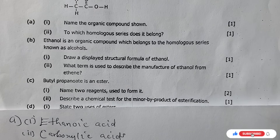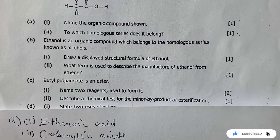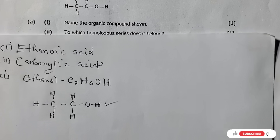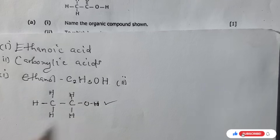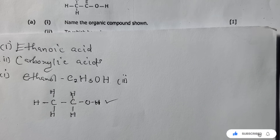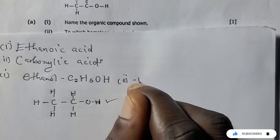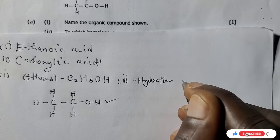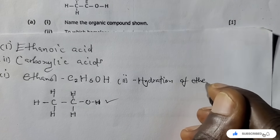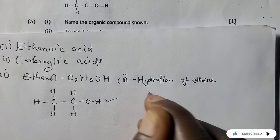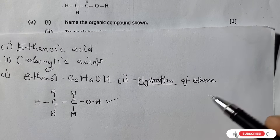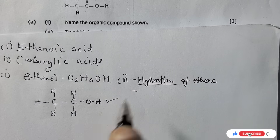The next question asks: what term is used to describe the manufacture of ethanol from ethene? This is simple — the answer is hydration. Ethanol can be manufactured by the hydration of ethene: when you add steam to ethene, ethanol is formed.